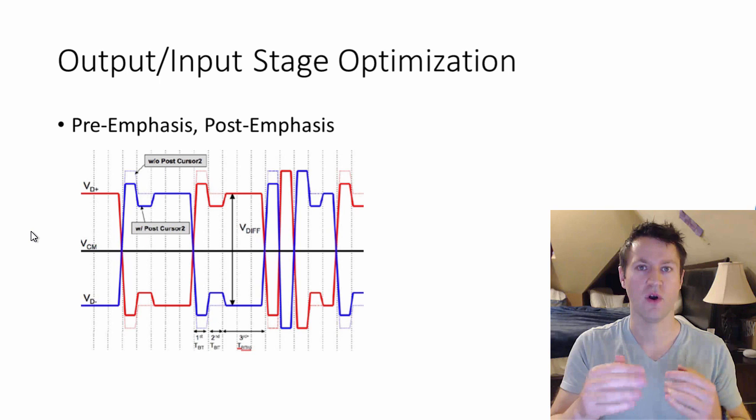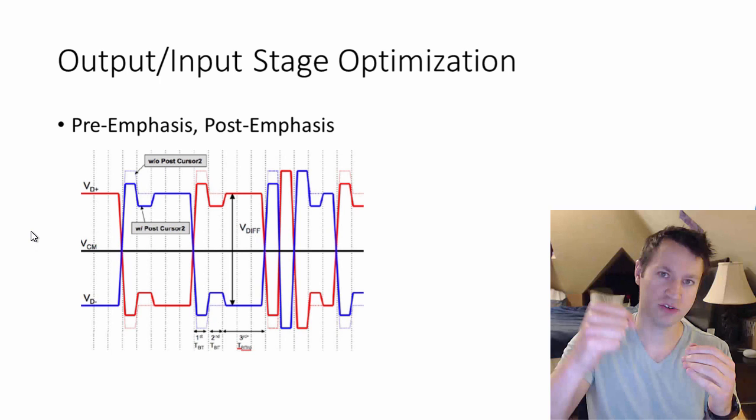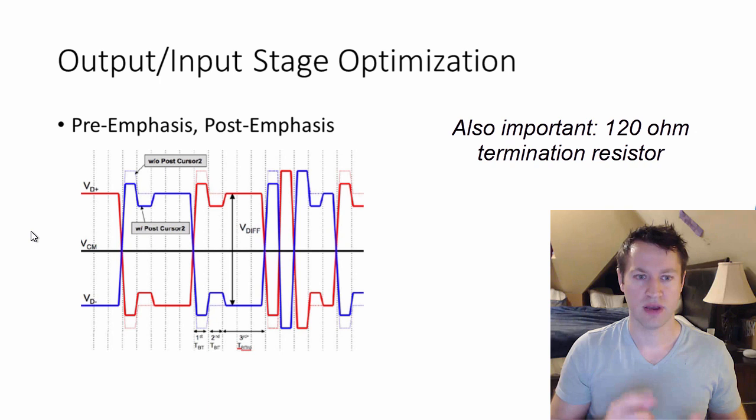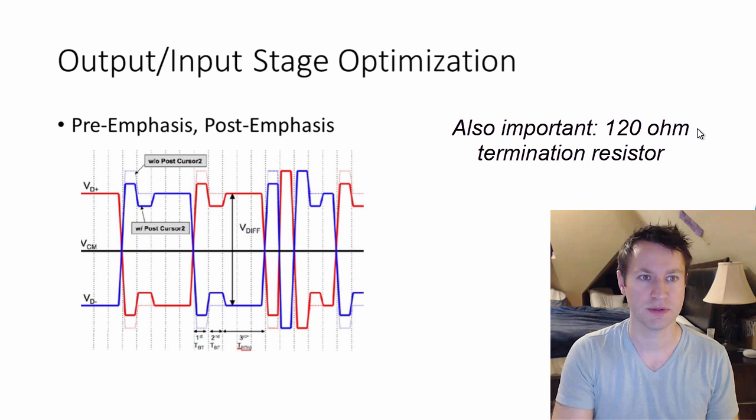This is all about just eking out as much performance as you can from your copper, your FPGA and just cranking up the bandwidth and getting data through that interface as fast as possible.